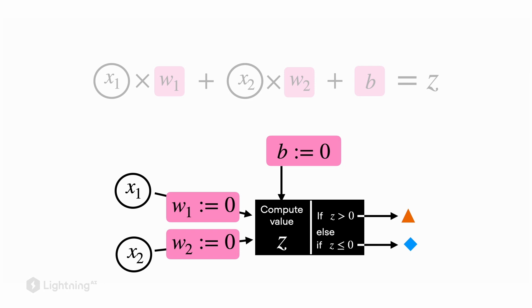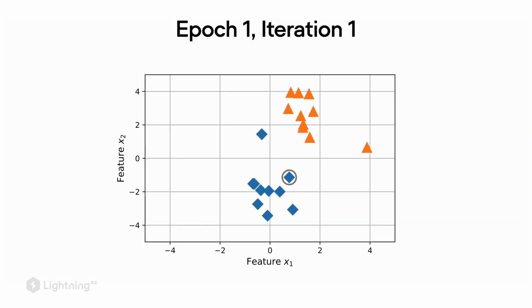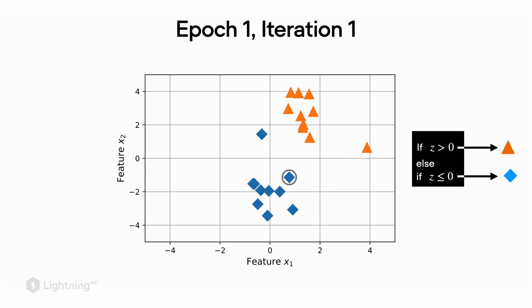Now let's take a look at a concrete example. Since we initialized the model weights with zero, we always have a multiplication with zero when we start, so the weighted sum will also be zero. Applying this to our concrete example dataset, here in epoch one, iteration one, the weighted sum will be zero, and our perceptron will predict the blue diamond for this first data point in the training set, which happens to be correct. Since we just made a correct prediction, there is actually no update necessary in this case.